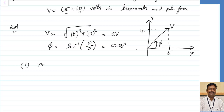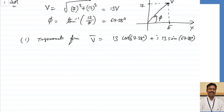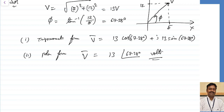In trigonometric form: V equals 13 into cos(67.38°) plus j times 13 into sin(67.38°). The values are not substituted — you represent in cosine and sine wave form, which is why it is called trigonometric form. In polar form, V equals 13 at an angle of 67.38 degrees. This is how all three forms are represented. Trigonometric, polar, and rectangular forms should now be clear.